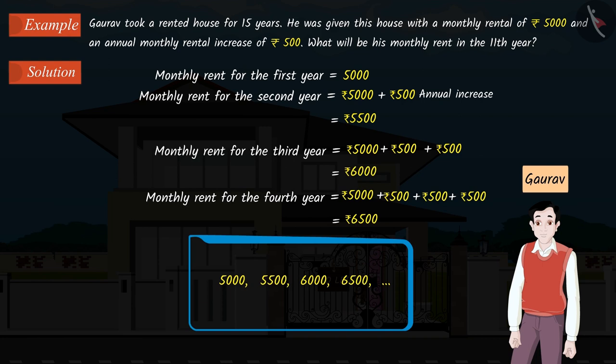If we observe carefully, we can see a pattern here. Can you tell me whether this is an arithmetic progression or not? Well done! This is an AP.